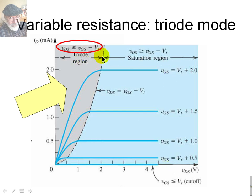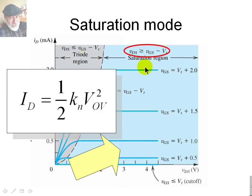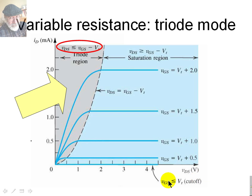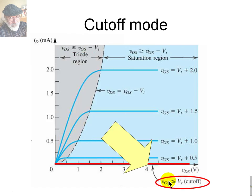The triode region requires two conditions: VGS is above the threshold voltage, and VDS is below the overdrive voltage. When VDS exactly equals the overdrive voltage, we have the parabolic boundary. When VDS is above the overdrive voltage, we enter the saturation region, in which the MOSFET works as an amplifier — its drain current depends on VGS and not on the channel voltage. Those are the three modes of operation: triode, saturation, and cutoff.